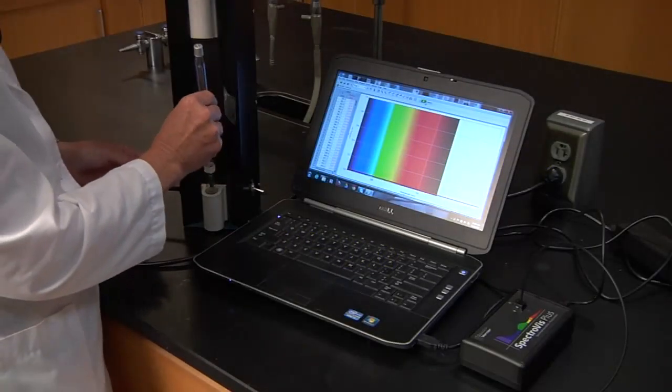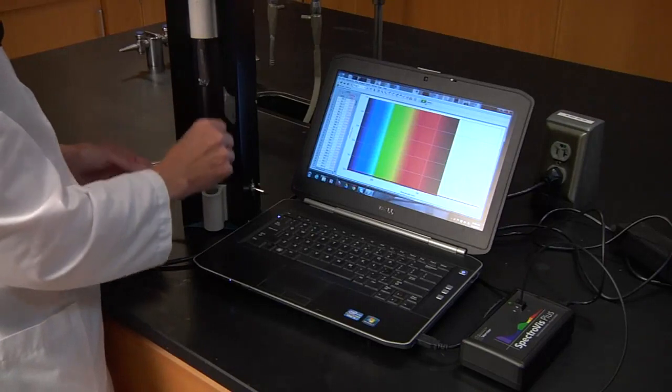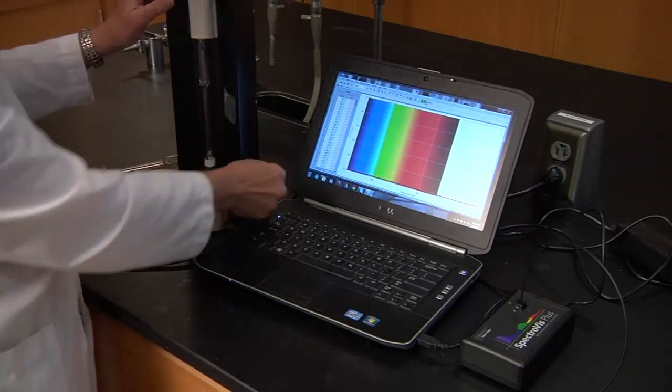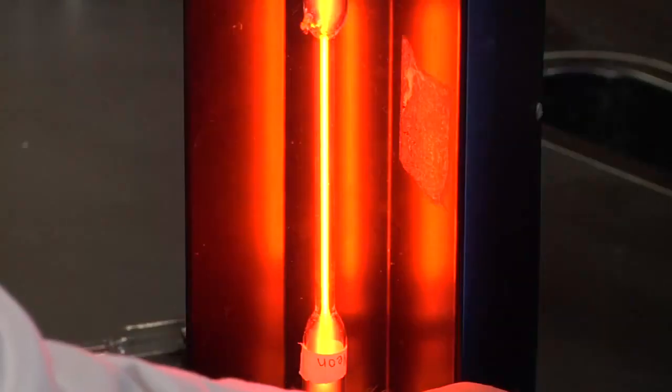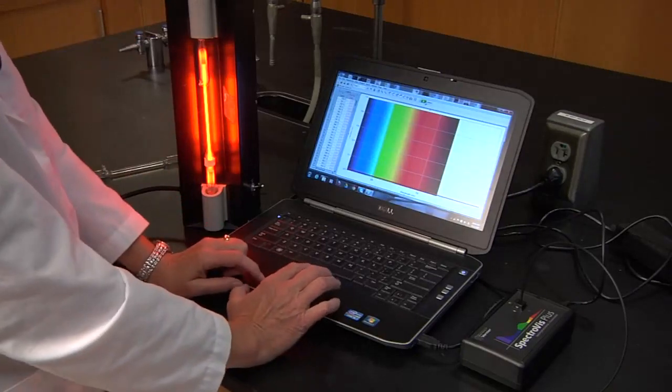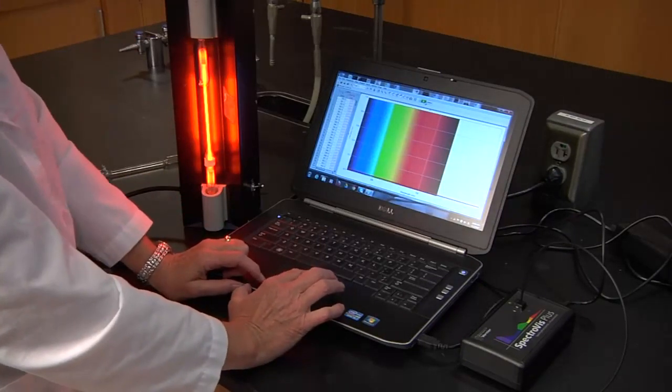Now we're going to take a look at neon. So we've got neon in our tube. We're going to turn it on. Your eyes can tell you that there is something different.